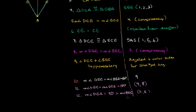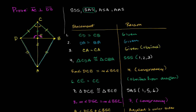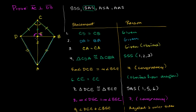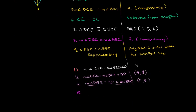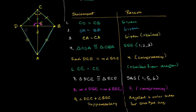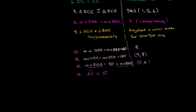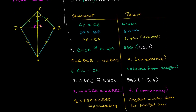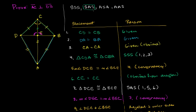And then we're done — statement 13, which is what we wanted to prove: AC is perpendicular to DB. This comes straight out of statement 12. We've completed a two-column proof and proven that segment AC is perpendicular to segment DB, using the SSS postulate and the side-angle-side postulate.